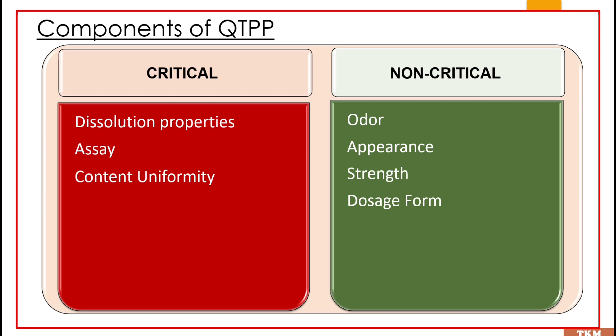When we talk about strength and dosage form, the dosage form is constant — it is fixed. There cannot be any variation in the dosage form. Also, the strength of the product is fixed; there cannot be any variation. That is why they come under non-critical factors.